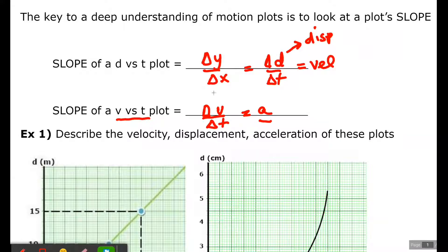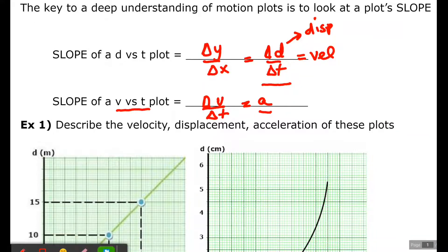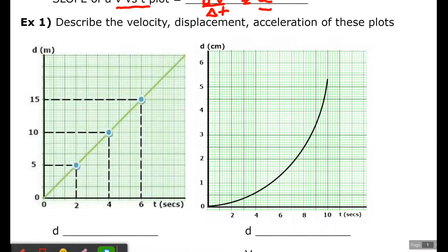Same thing applies to a D versus T plot. If the slope is negative 1, then the velocity is negative 1 meters per second. If the slope is positive 6, then the velocity is positive 6 meters per second. Let's take a look at some plots.